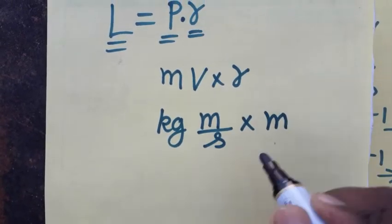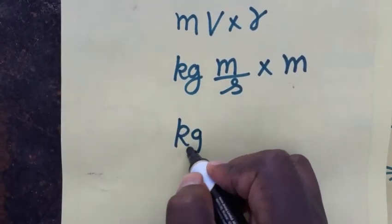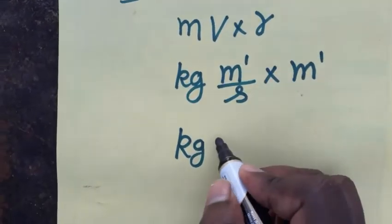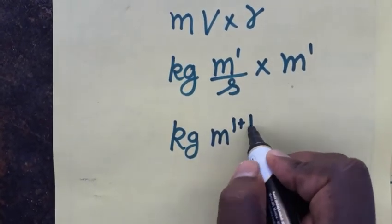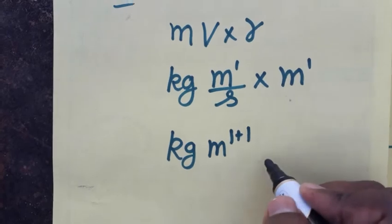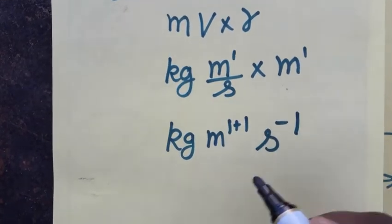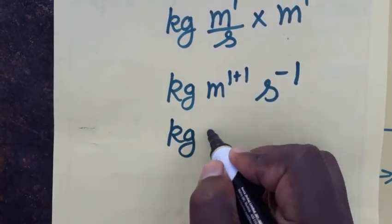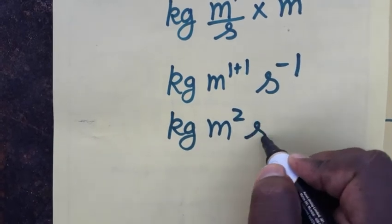Displacement will be meter. So meter, meter the power will be 1, so meter 1 plus 1 the power will be 2. And second I am bringing as numerator second minus 1. So kg, meter square, second minus 1.